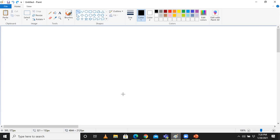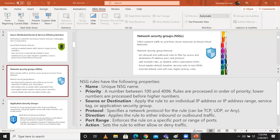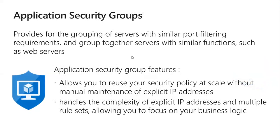These are the choices for network security group and application security group. ASG provides grouping of servers with similar port filtering requirements — group together servers with a similar function such as web servers. Application security group features allow you to reuse security policy at scale without manual maintenance of explicit IP addresses. Otherwise, creating NSG at NIC level requires maintaining each and every rule for every NSG, which requires a lot of maintenance. ASG handles the complexity of explicit IPs and multiple rule sets, allowing you to focus on business logic.